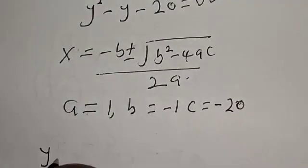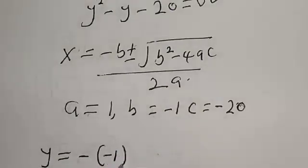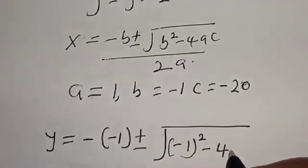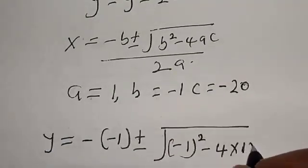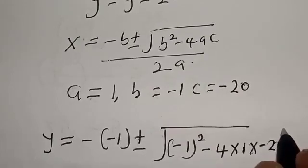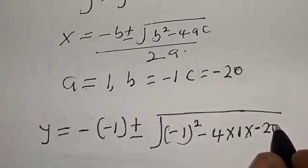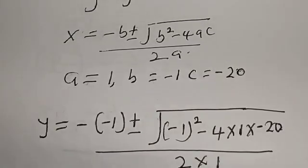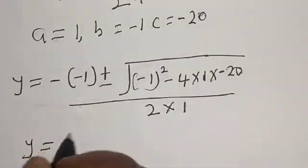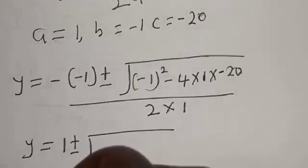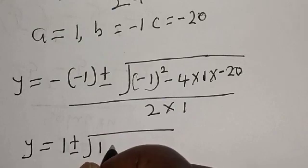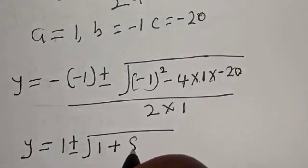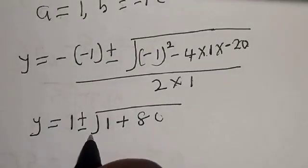Now y equals minus of minus 1, plus or minus square root of minus 1 squared minus 4 times 1 times minus 20, all over 2 times 1. This gives us 1 plus or minus square root of 1 plus 80, over 2.